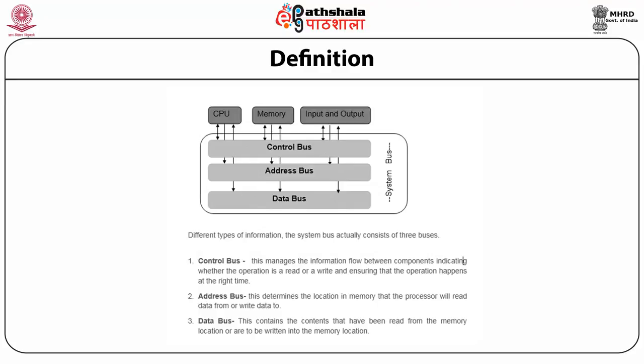Buses facilitate communication between the CPU, memory and input devices. There are three kinds of buses: control bus, address bus and data bus, which connect CPU, memory and input/output devices. The control bus manages the information flow between components, indicating whether an operation is a read or write, and ensures operations happen at the right time. The address bus determines the memory location the processor will read from or write to. The data bus contains the contents read from or written to the memory location.